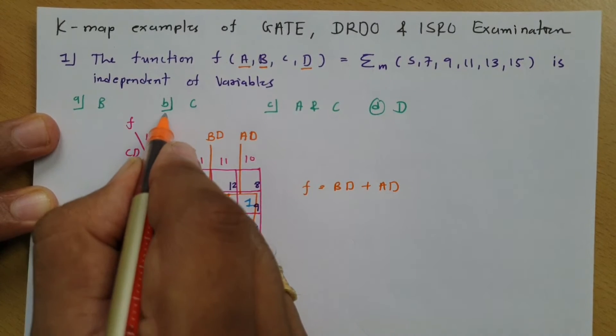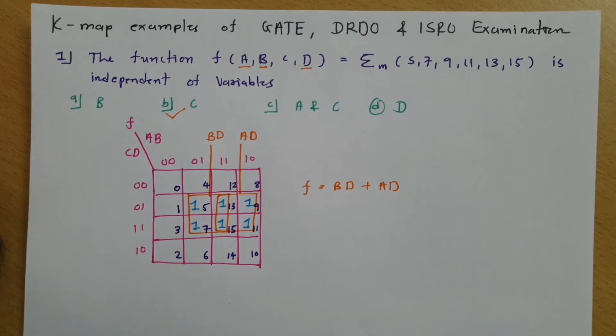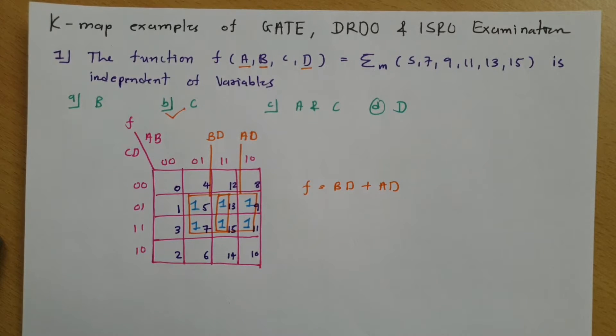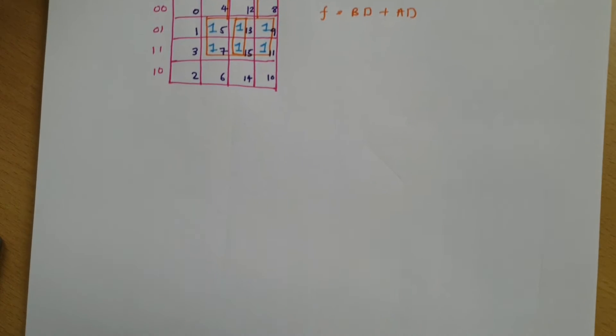Observing this function f = BD + AD, it is depending on B, D, and A. It is not depending on C. So we can say it is independent of variable C.